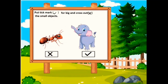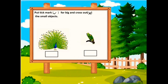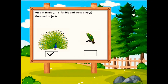Yes, children. Now tell me, is the peacock big or is the parrot big? Yes, children. The peacock is big so we put a tick mark, and the parrot is small so we put a cross mark.